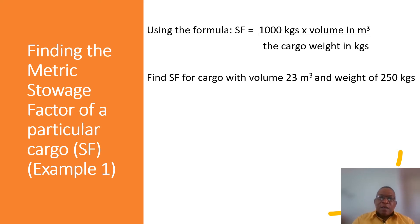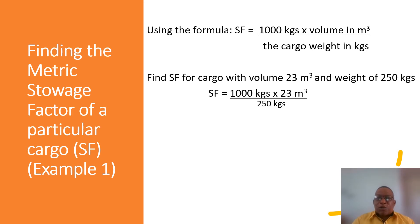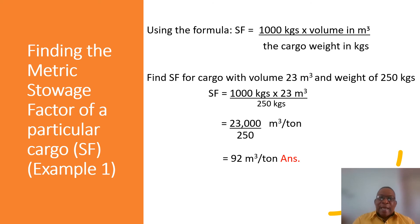Let's use the given information to determine the storage factor of this cargo. The volume is 23 cubic meters and the weight is 250 kilograms. Plugging into the formula: SF = 1000 kg × 23 m³ ÷ 250 kg. That gives us 23,000 divided by 250, with the unit cubic meters per ton, and we get 92 cubic meters per ton. That is example one.